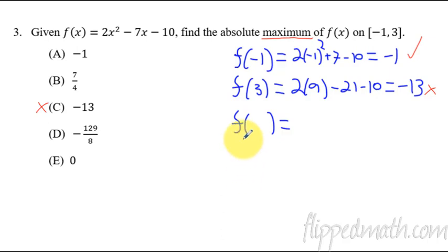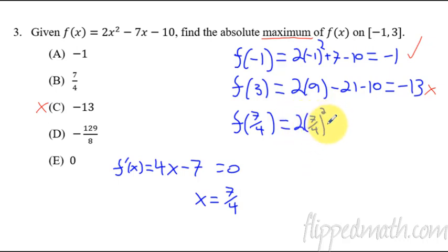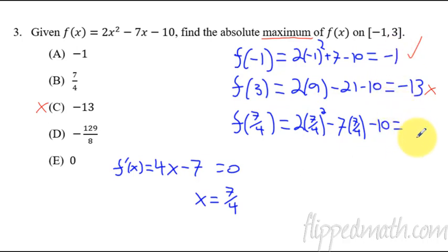Now we need to check the critical points, because those are possible candidates for max and mins. The derivative of f is four x minus seven. Set that equal to zero and solve — you end up with x equals seven-fourths. Don't be tricked: seven-fourths is just the critical point, the x value you plug in — it is not the max or min itself. So now plug in seven-fourths: two times seven-fourths squared minus seven times seven-fourths minus ten. Compare that answer to negative one — whichever is higher is your absolute maximum.